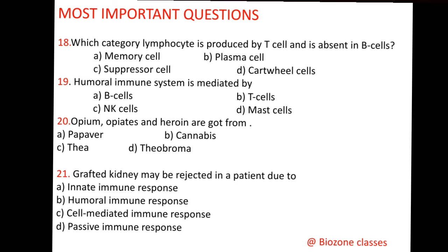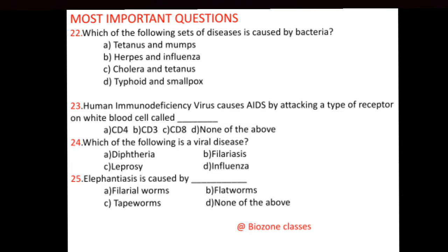Question number 22: Which of the following sets of diseases is caused by bacteria? A. Tetanus and mumps, B. Herpes and influenza, C. Cholera and tetanus, D. Typhoid and smallpox. For such questions you should know the causal organism. C is the correct option — cholera and tetanus are caused by bacteria.